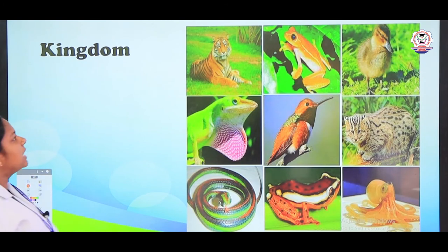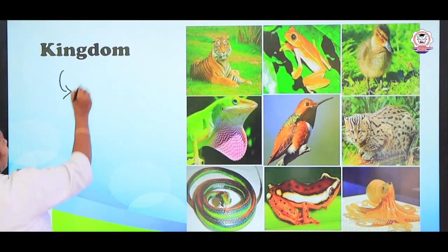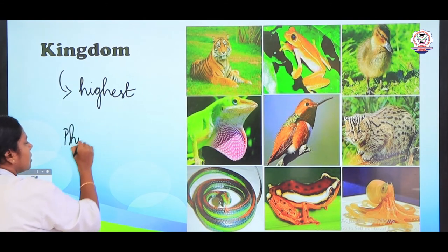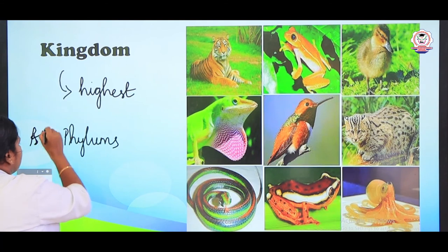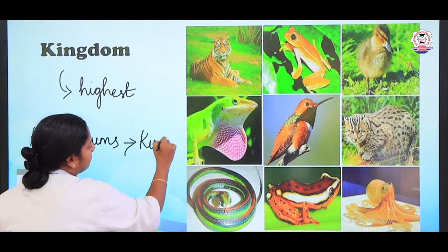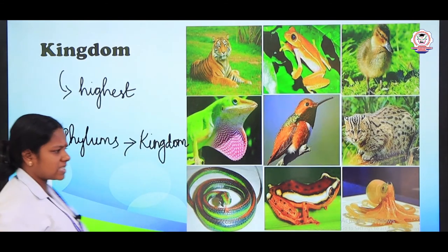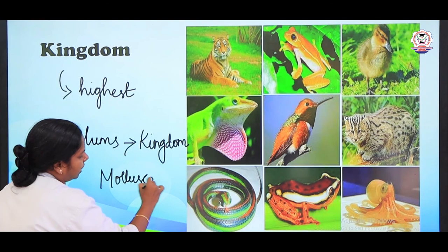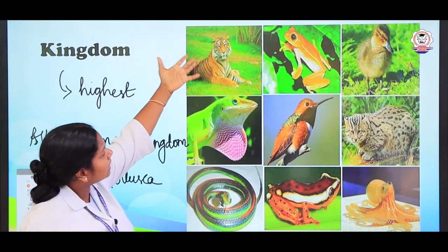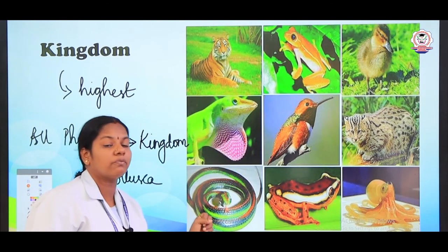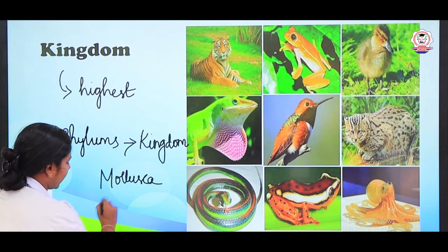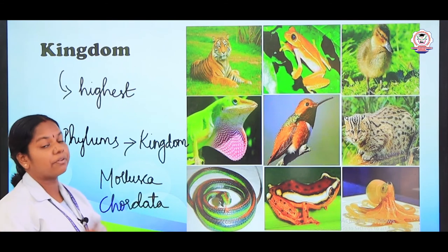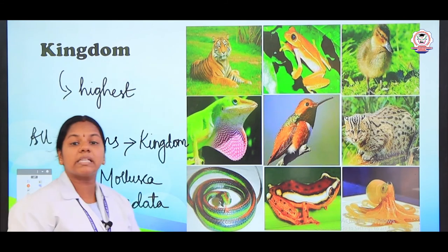The next higher level is a kingdom — it is the highest level of classification. All the phylums join together to form a kingdom. For example, the octopus belongs to phylum Mollusca, and all tiger, reptiles, and birds belong to phylum Chordata. Totally there are 11 phylums, and all 11 phylums are placed under the single kingdom — kingdom Animalia.